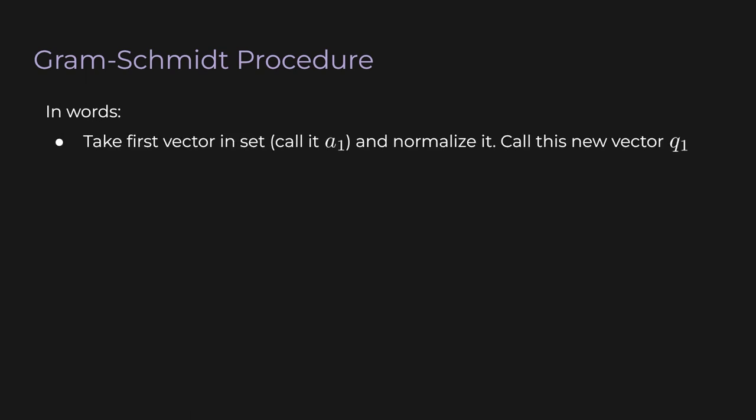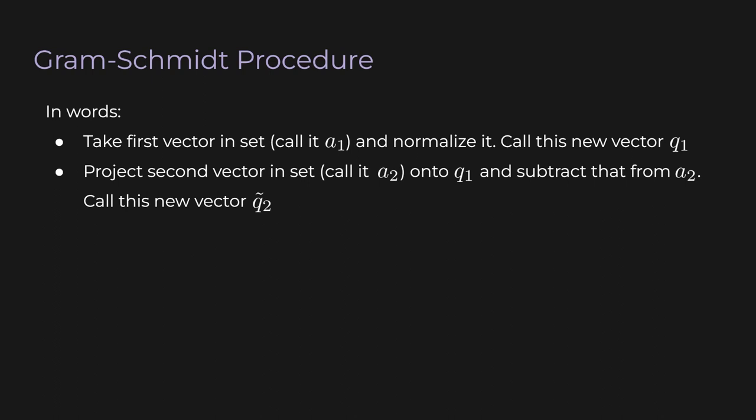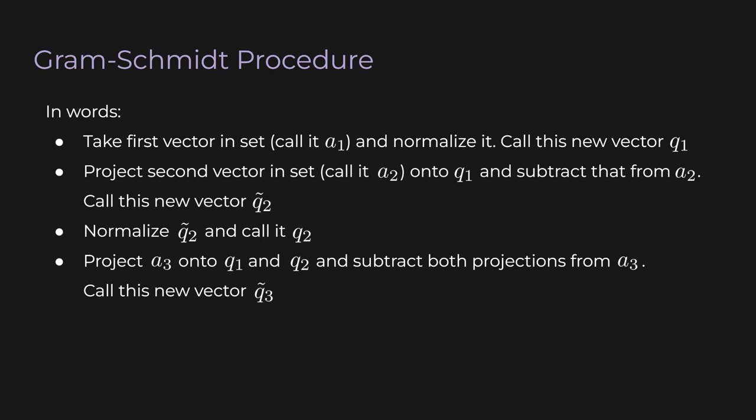Take the first vector in the set, let's call it a1, and normalize it. Call this new vector, the normalized vector, q1. Next, we project the second vector in the set, call it a2, onto q1 and subtract that from a2. The new vector that we get, let's call that q2 tilde. We just normalize q2 tilde and call the result q2. After that, we project a3 onto q1 and q2 and subtract both projections from a3. We call that new result q3 tilde. We normalize q3 tilde and call that q3, and we just keep doing that over and over.